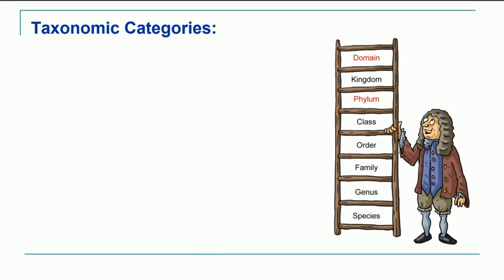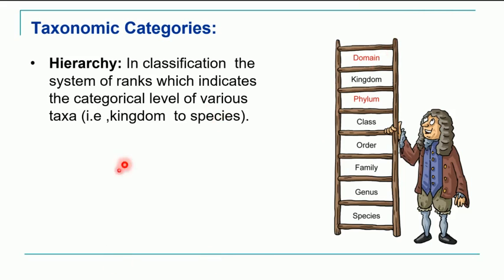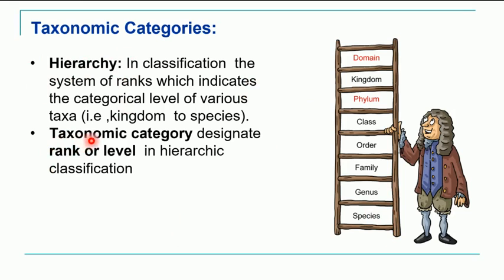There are different taxonomic categories, and before going into those categories we will understand the meaning of the term hierarchy. In classification, the system of ranks which indicates categorical levels of various taxa, ranging from kingdom to species, are the normally used levels of organization. This is referred to as hierarchy. On the other hand, a taxonomic category is designated to a level in this hierarchical classification.